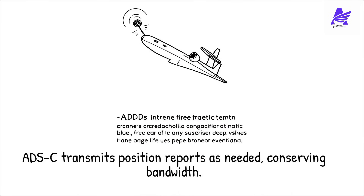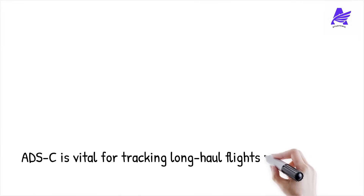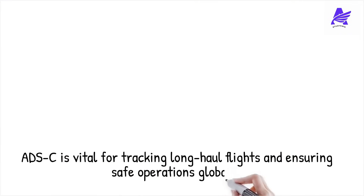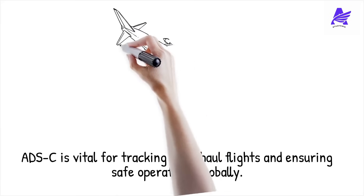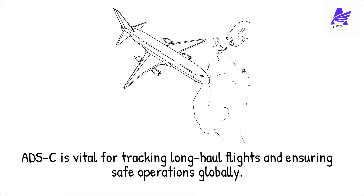Unlike ADS-B, which transmits data continuously, ADS-C sends data only when necessary, reducing bandwidth usage. ADS-C is essential for long-haul and transoceanic flights, helping ATC track aircraft safely over remote regions. It also enables optimized flight routing through the future air navigation system. By allowing ATC to monitor aircraft separation in real time, ADS-C ensures safer flight operations worldwide.